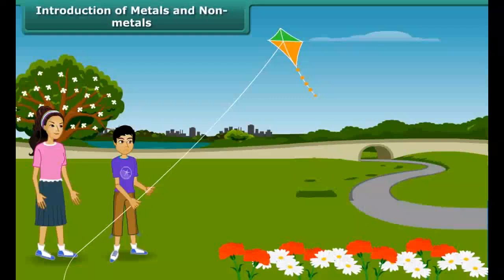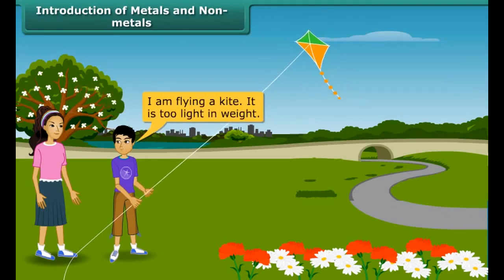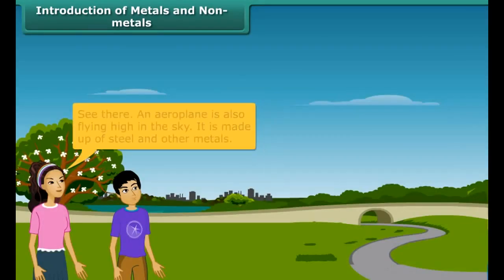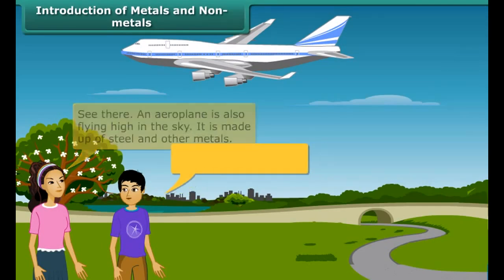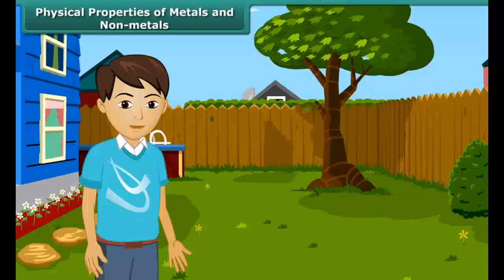Hey buddy, what are you doing here? I am flying a kite — it is too light in weight. Yes, because it is made up of paper, and paper is a non-metal item. See, there an airplane is also flying high in the sky; it is made up of steel and other metals. But what are these metals and non-metals? We use many things in our daily lives that are made up of metals and non-metals. Let's know about their properties.